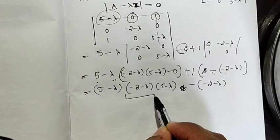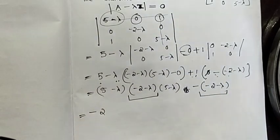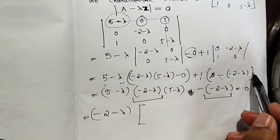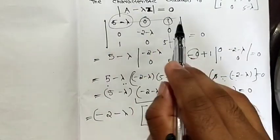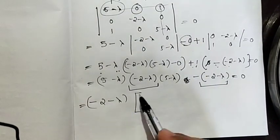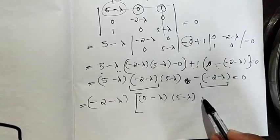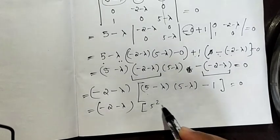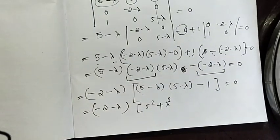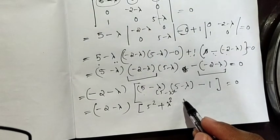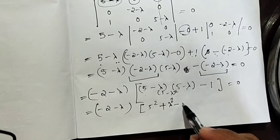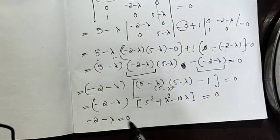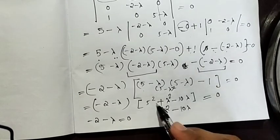We can write this in factored form. We have two different values: minus 2 minus lambda, and 5 minus lambda. Using the identity a squared plus b squared minus 2ab, we expand: 5 minus lambda squared gives 25 minus 10 lambda plus lambda squared. So the characteristic equation becomes lambda squared minus 10 lambda plus 25, all set equal to zero.